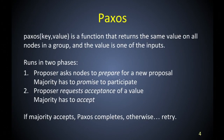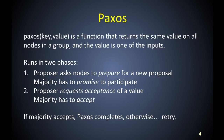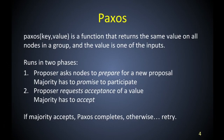Essentially, this is the Paxos algorithm. Imagine you have a group of nodes — some well-defined group where they all know about each other. Each node has a function called Paxos with a key and a value. For a given key, this function always returns the same value on all nodes in the group, and the value is one of the inputs. So one node might call it with value 1, another with value 5, another with value 10 — maybe it returns 5 on all of them, or 10, or 1. It always returns the same value on all nodes, and that's useful.